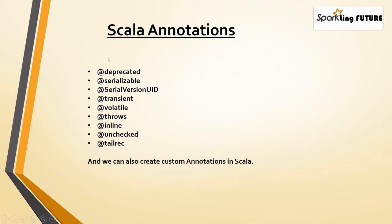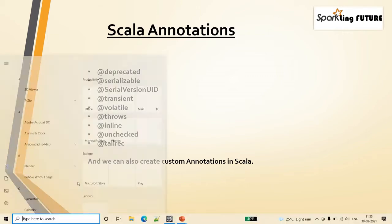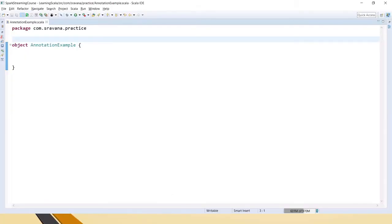There are many built-in annotations and we can also create our own custom annotations. Coming to @deprecated — if you want to tell the compiler to show a warning when some method is used, we use @deprecated in the code. I'll just show how it looks when you create that.